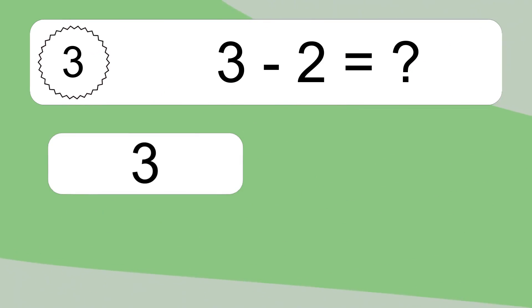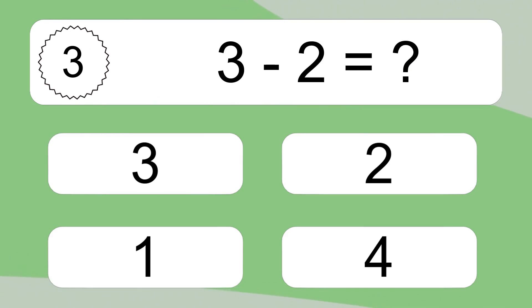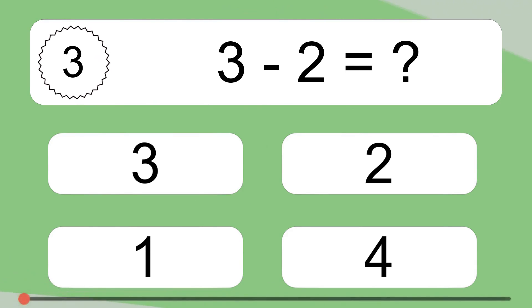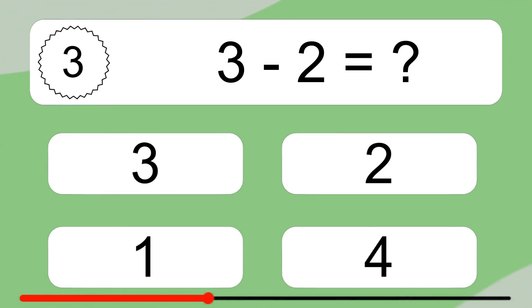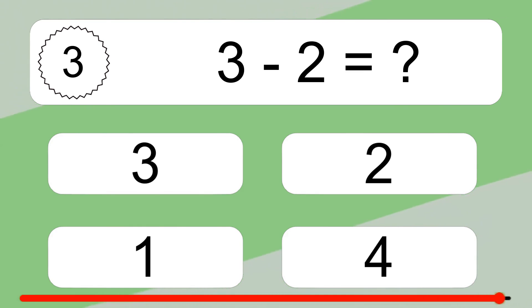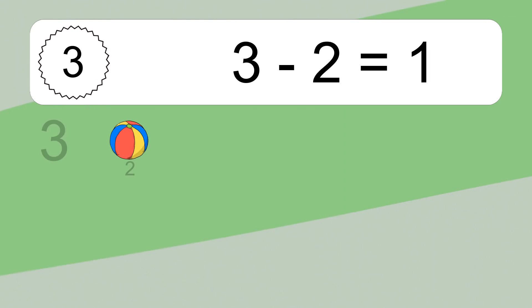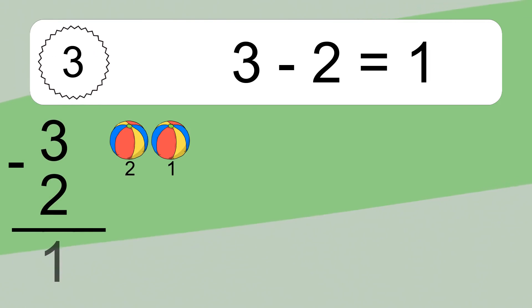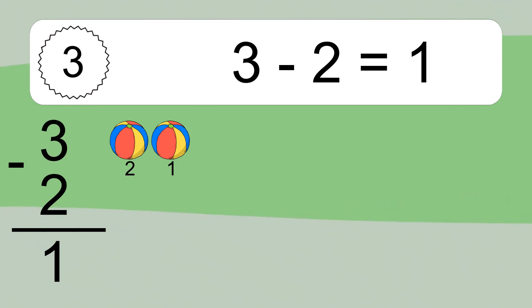3 minus 2 equals what? 3 minus 2 equals 1. Let's count it: 2, 1.